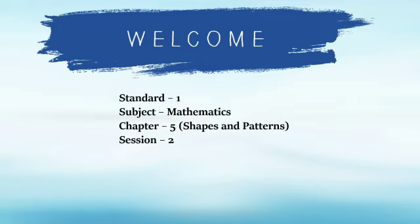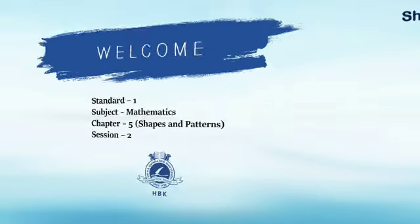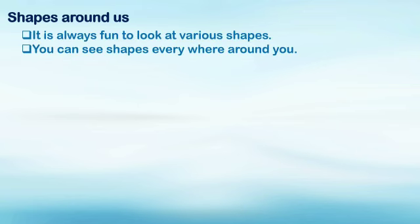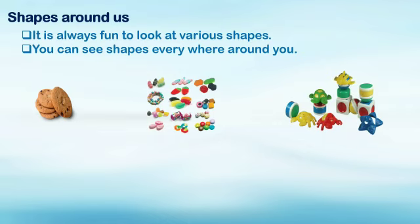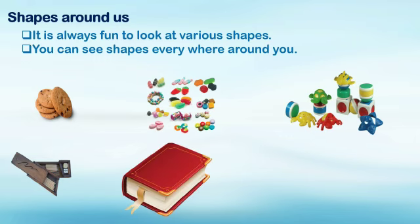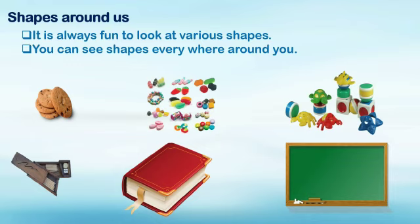Hello students, welcome to the second session of Chapter 5, Shapes and Patterns. Our first heading is Shapes Around Us. It is always fun to look at various shapes. You can see shapes everywhere around you, such as in cookies, in your candies, in your toys, and you can observe different shapes in different objects such as pencil box, book, and blackboard. These all are examples of different types of shapes around you.